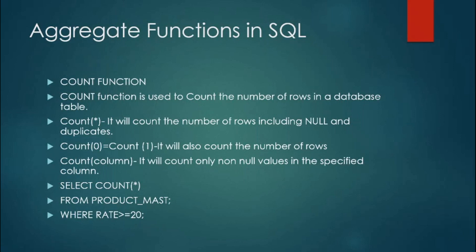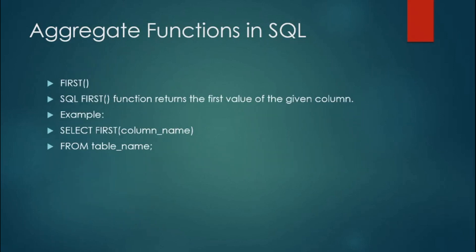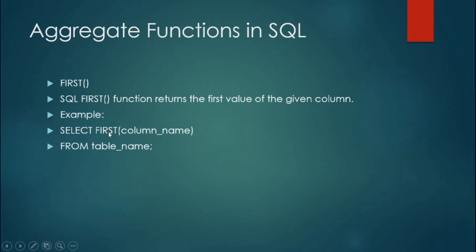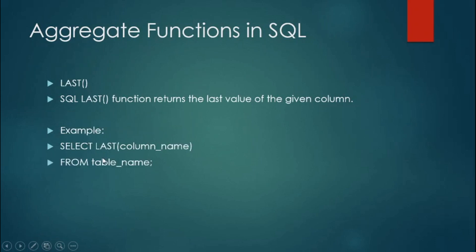Now, FIRST and LAST. FIRST will fetch the first value of a given column — the syntax is: SELECT FIRST(column_name) FROM table_name. LAST will fetch the last value of a given or specified column — the syntax is: SELECT LAST(column_name) FROM table_name. You just have to specify the column name of which you want to fetch the first or last value.